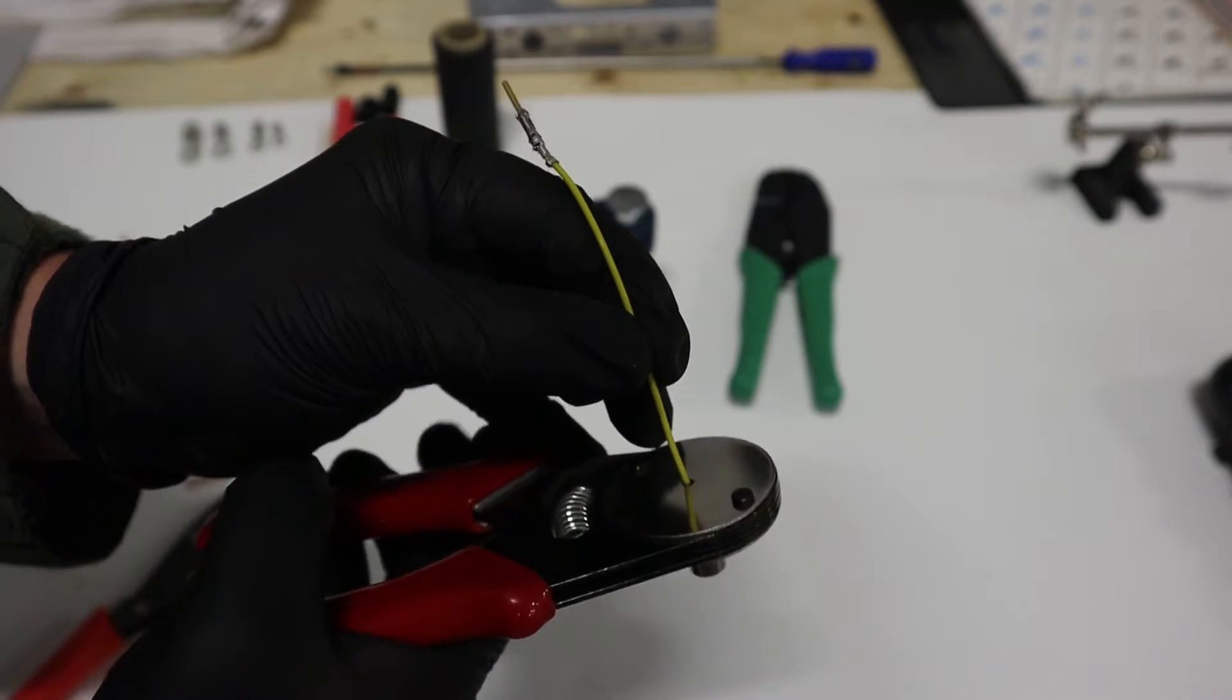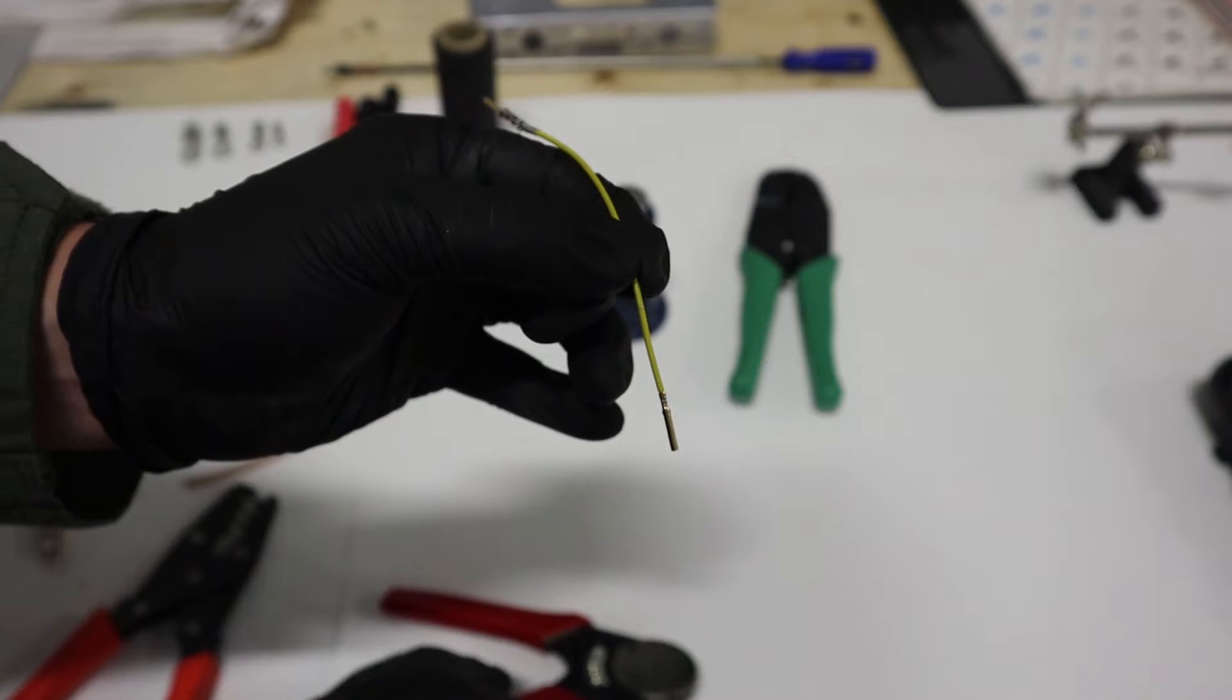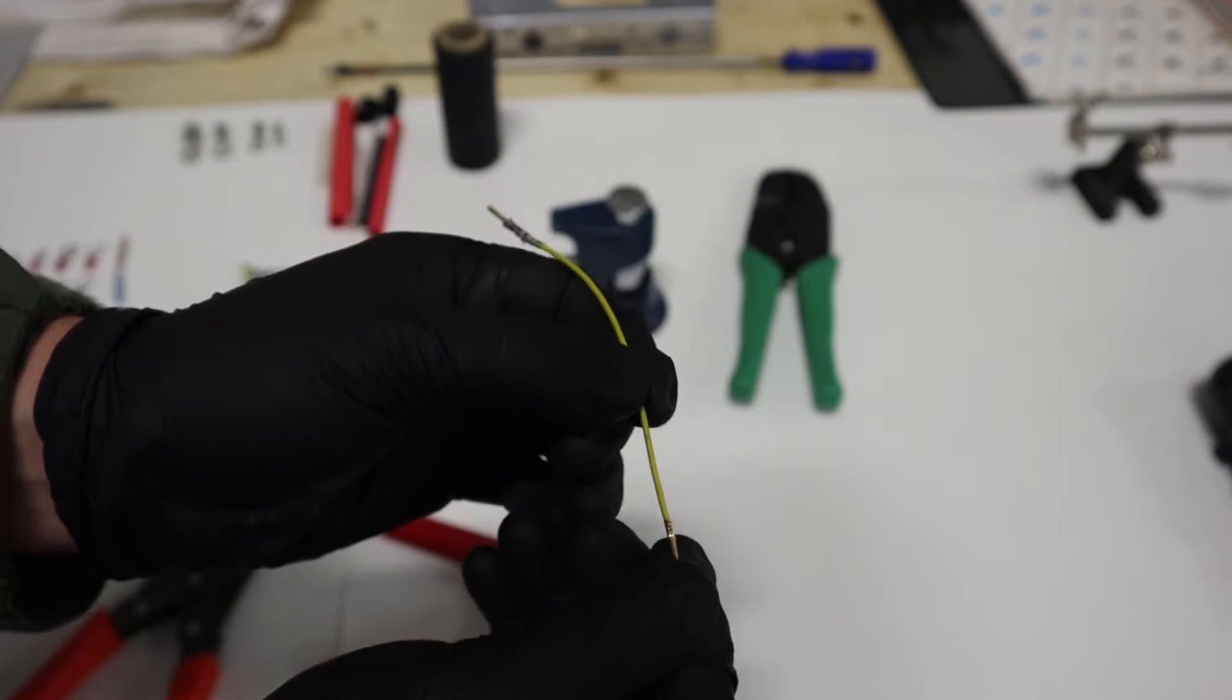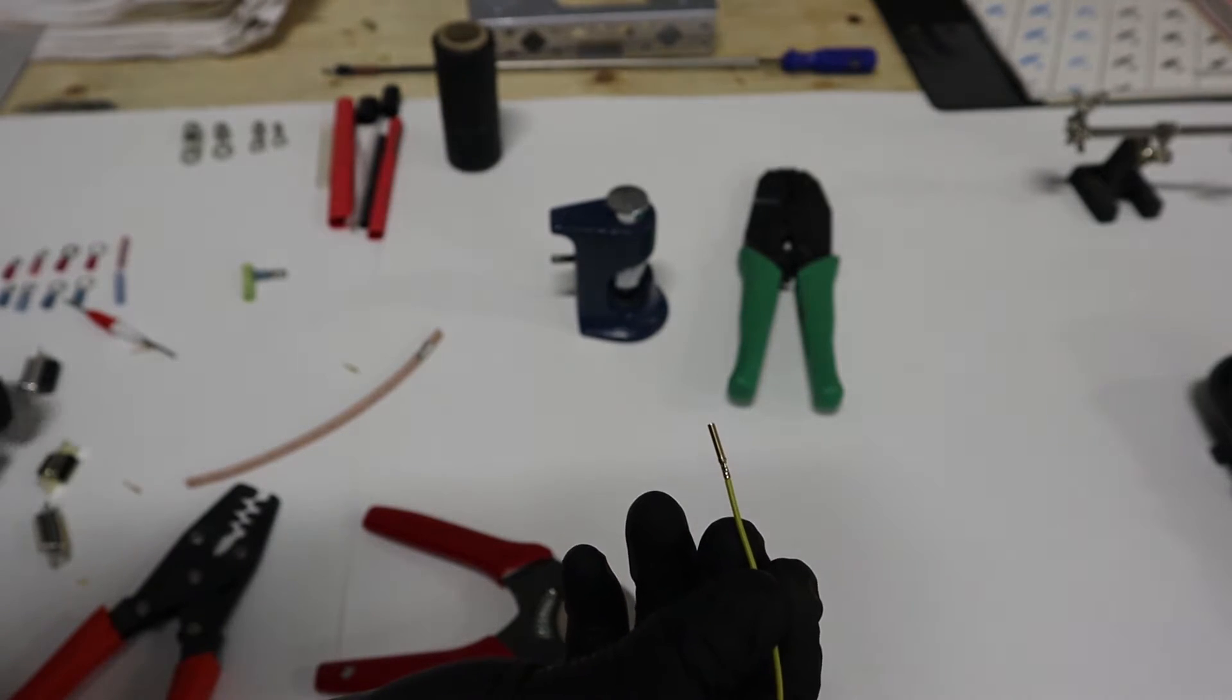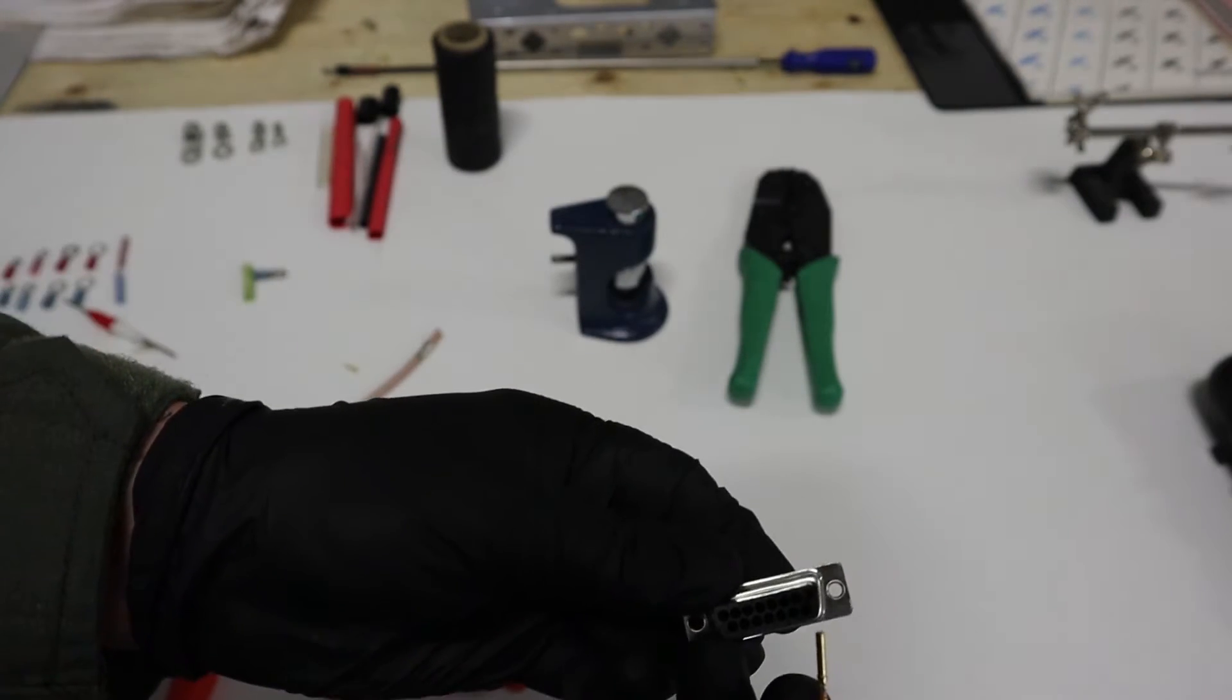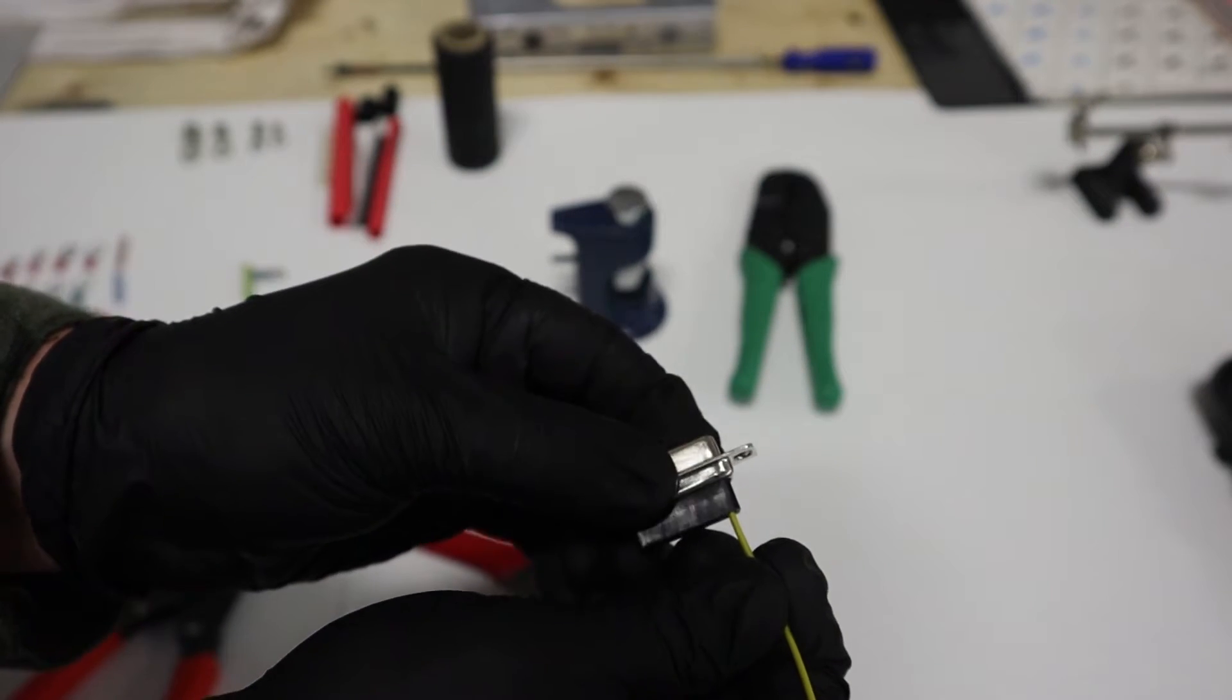So you just slide the wire in there, squeeze the tool fully, and it crimps around the base of the D-sub pin connector. And you get a nice small, strong connection, and it slides into the back—in this case, the back of the female housing—and you'll hear a little click as it slides in.